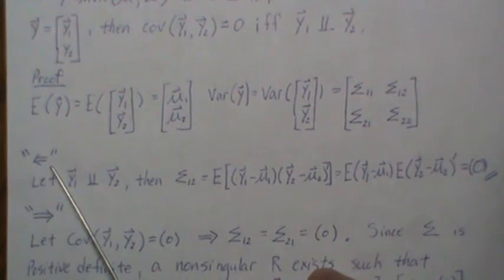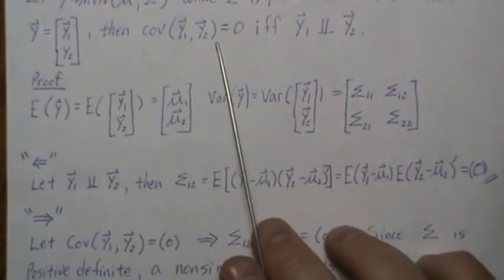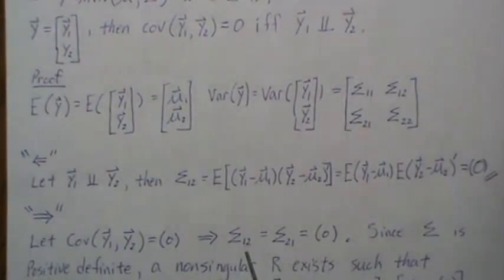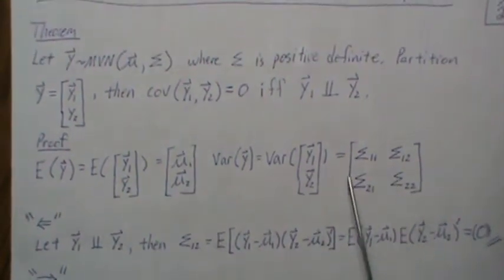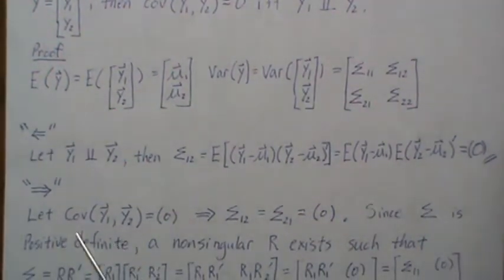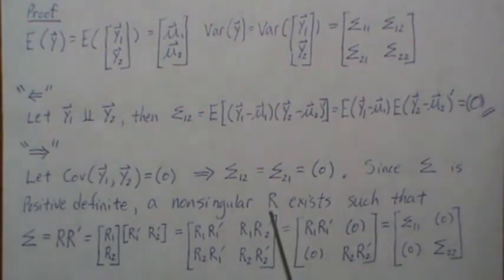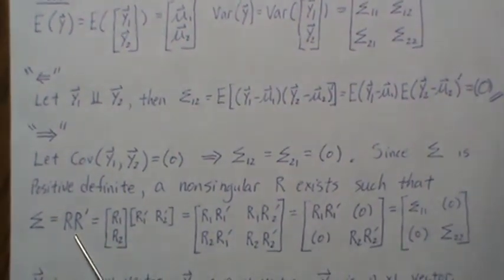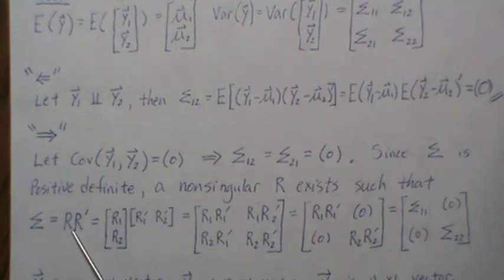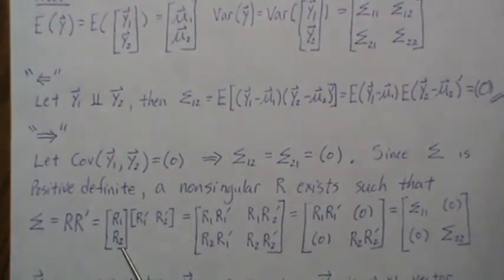Now let's go the other direction — one side is always easier than the other. We assume the covariance between y1 and y2 is zero, and we want to show they're independent. This implies sigma12 and sigma21 are zero. Since sigma is positive definite, a non-singular matrix R exists such that sigma equals R times R-transpose — whether via Cholesky decomposition, square root matrix, or another method.